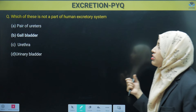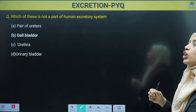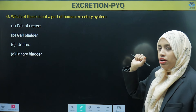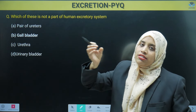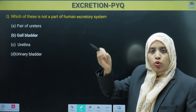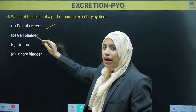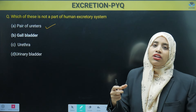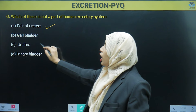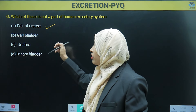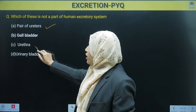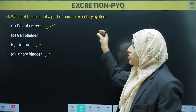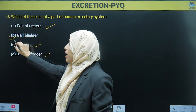Next question: which of these is NOT part of the human excretory system? The pair of ureters is part of the excretory system because it collects urine from the kidney to the urinary bladder. Gallbladder is part of the digestive system — it helps in digestion. Urethra is the opening through which urine is released, so it is part of the excretory system. Urinary bladder is where urine is temporarily stored. So the answer is gallbladder — it is not part of the excretory system.